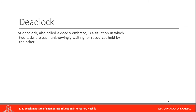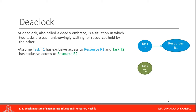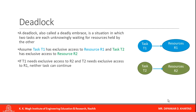What is deadlock? A deadlock, also called a deadly embrace, is a situation in which two tasks are each unknowingly waiting for resources held by the other task. For example, assume task 1 has exclusive access to resource 1 and task 2 has access to resource 2. If task 1 needs exclusive access to resource 2 and task 2 needs resource 1 access, then both tasks cannot continue. This situation is called a deadlock.